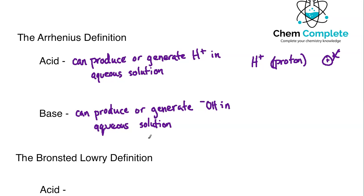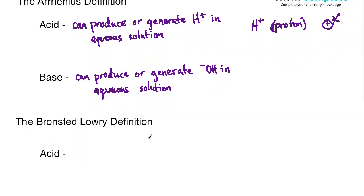So these are the definitions here. We've got the ability to produce H+ in aqueous solution, that's an acid, and can produce or generate an OH- in aqueous solution, and that would be a base. So now we're going to move on.